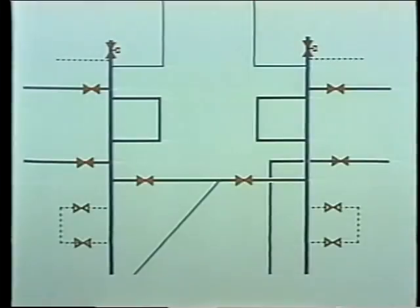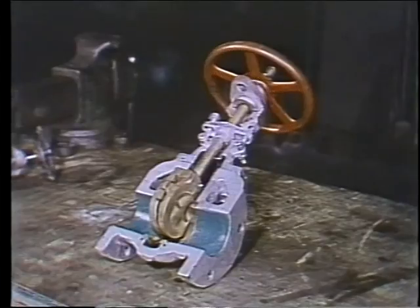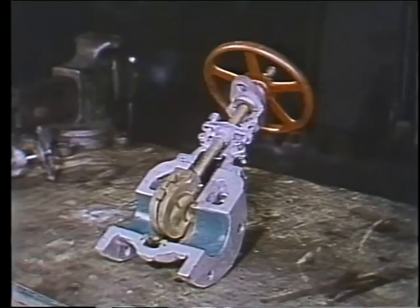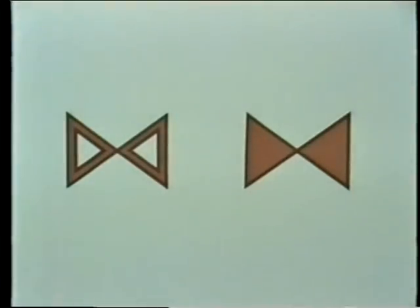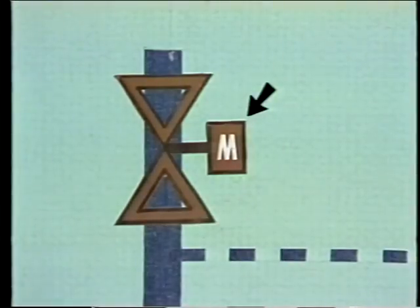Now let's add the valves to our system to allow control of flow through the pipes. A gate valve is used to stop and start flow through a section of piping. Gate valves are normally made to operate in a fully open or fully closed position. On a print, the symbol on the left indicates a gate valve that is normally left open; the symbol on the right indicates a gate valve that's normally closed. Gate valves have several methods of operation, including manual or motor-operated. Motor-operated gate valves are indicated by an M in a block on the symbol.